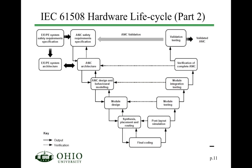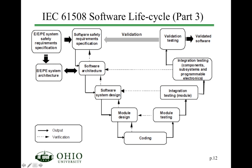Looking at the hardware life cycle within IEC 61508, you can clearly see the standard V life cycle. You have a hierarchical development process going from an ASIC — which is essentially a chip — breaking it down into a behavioral model, then sub-modules, then synthesize, place and route, get the final code, perform verification, and finally validation. Similarly with software, you start with your electronic system and come up with a set of safety requirements.